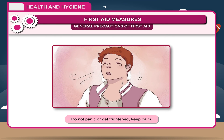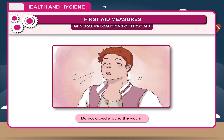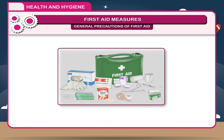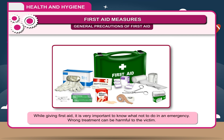General precautions of first aid: 1. Do not panic or get frightened — keep calm. 2. Do not crowd around the victim. 3. If the person is badly injured, immediately rush to the doctor. 4. While giving first aid, it is very important to know what not to do in an emergency. Wrong treatment can be harmful to the victim.